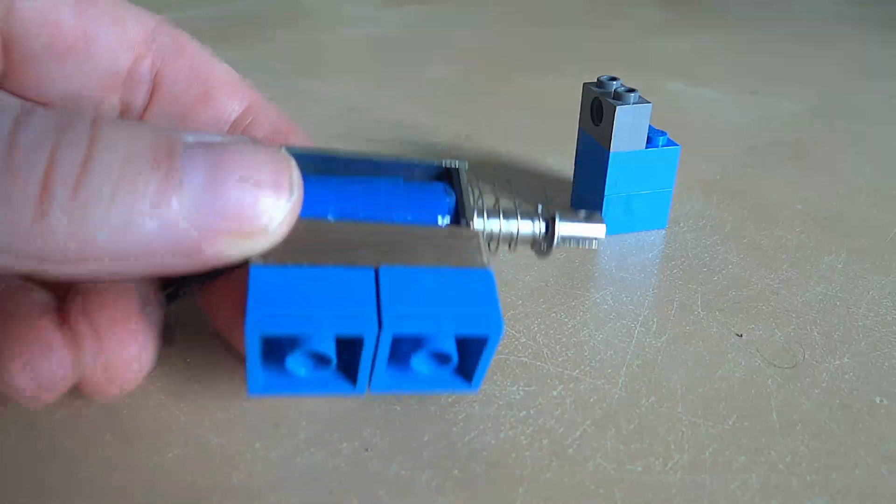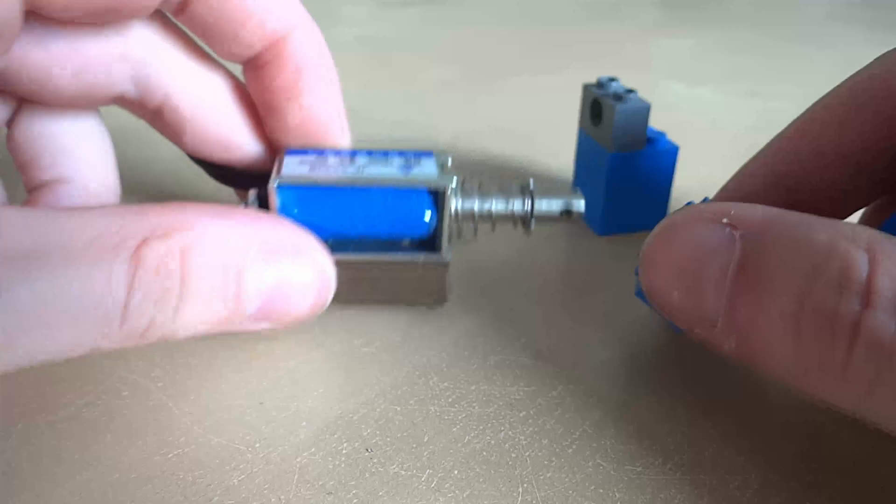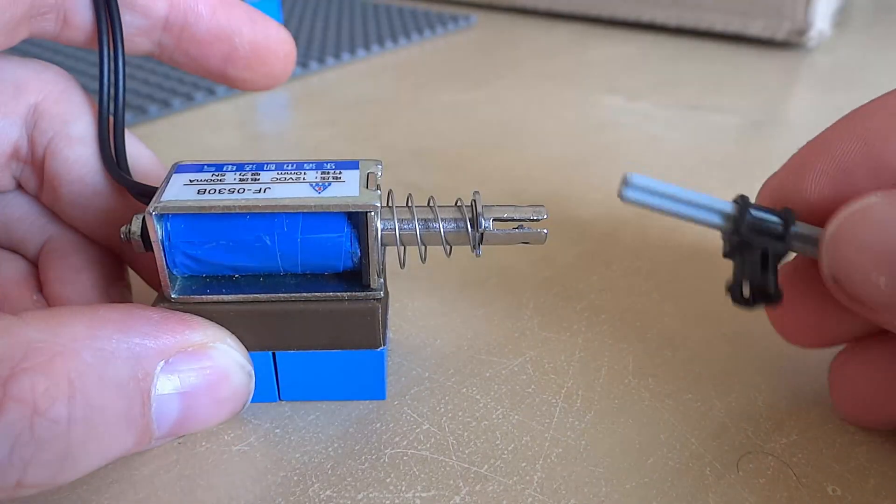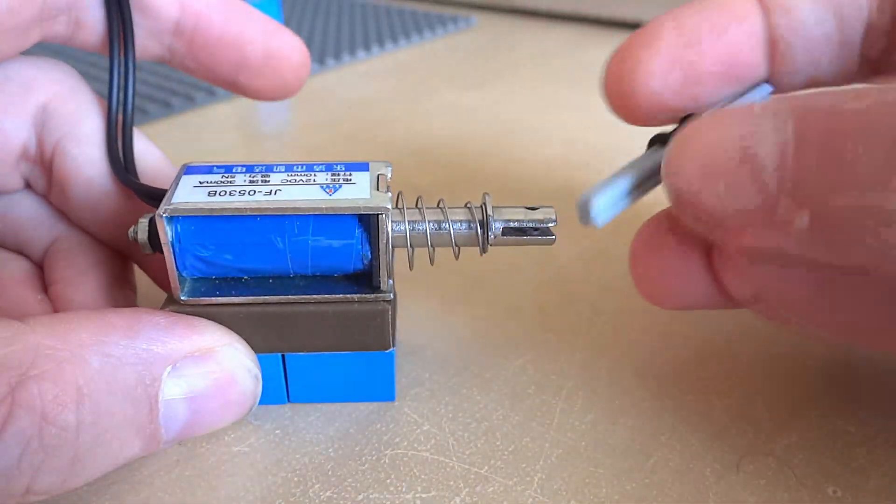Here you can see the first prototype of this. It's a bit rough but all the dimensions check out and the solenoid axle is at the correct height. Great! But now to somehow connect the Lego axle to the solenoid axle.